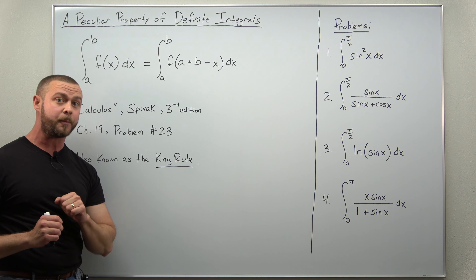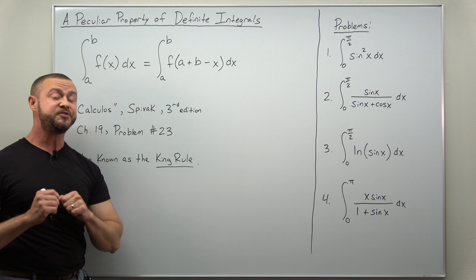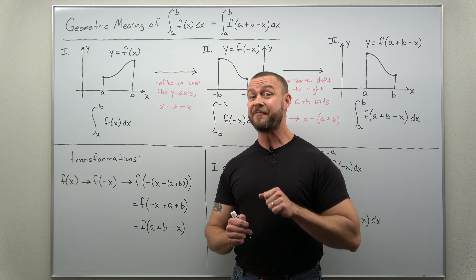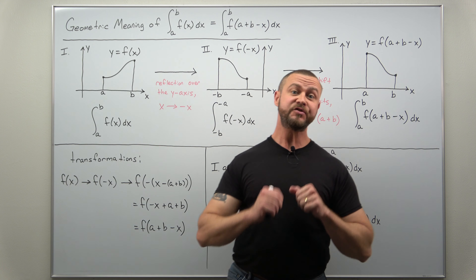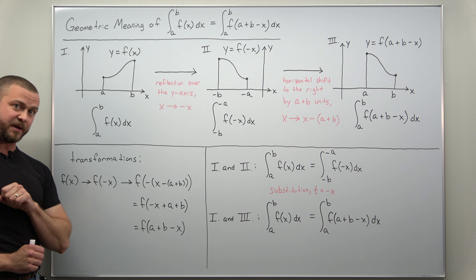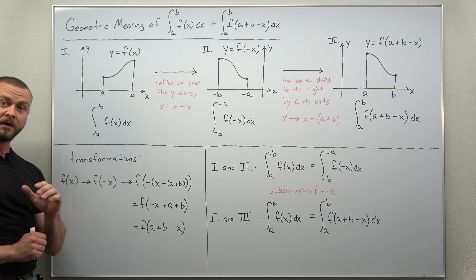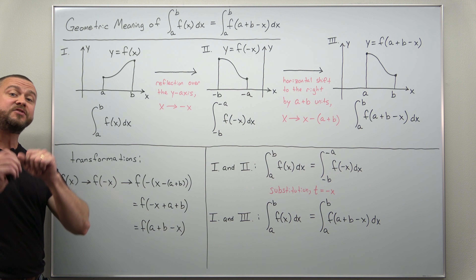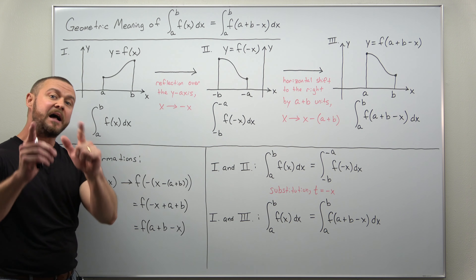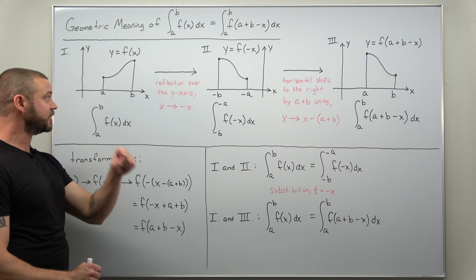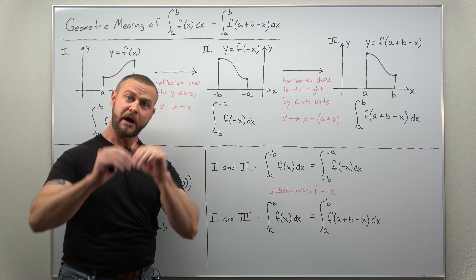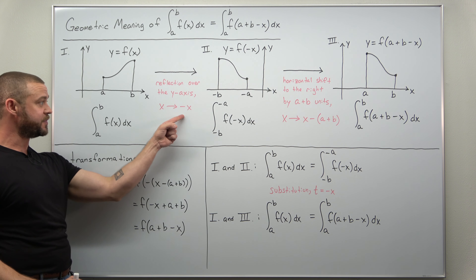Before we get to our problems, let's get to a geometric understanding of this property of definite integrals. To understand it geometrically, we need to recall that a definite integral at a basic level calculates area. Starting with a simple visual representation of a definite integral from a to b, the key is to look at the inside: the combination a plus b minus x. We can view that as a composition of two different transformations — first a reflection over the y-axis, followed by a horizontal shift.